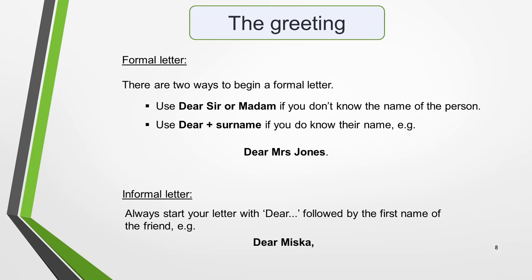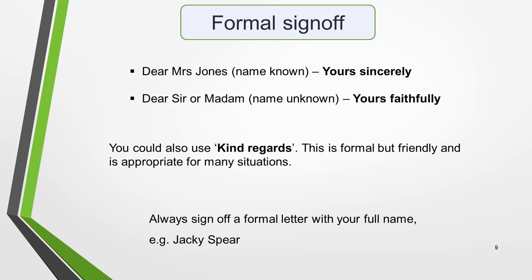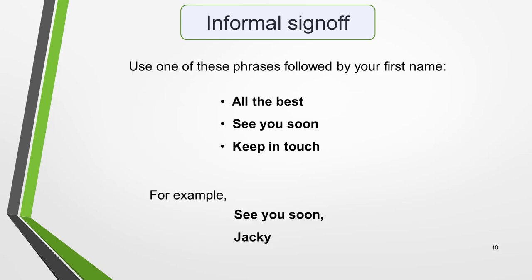The greeting you use will determine how you sign off your letter. For a formal letter, there are two main options for signing off. Use 'Yours sincerely' if you started the letter with 'Dear' and the surname, for example, 'Dear Mrs Jones'. And use 'Yours faithfully' if you started the letter with 'Dear Sir or Madam'. You could also use 'Kind regards' — this is formal but friendly and is appropriate for many situations, and particularly useful if you struggle to remember how to spell 'Sincerely' and 'Faithfully'. Always sign off a formal letter with your full name, for example, 'Yours sincerely, Jackie Spear'. For an informal letter to a friend, use one of these phrases followed by your first name: 'All the best', 'See you soon', 'Keep in touch' — for example, 'See you soon, Jackie'.